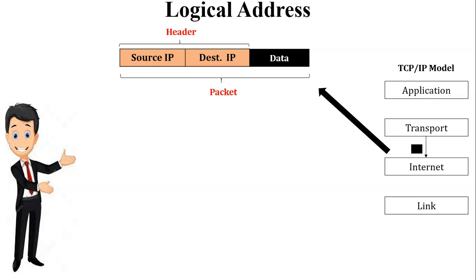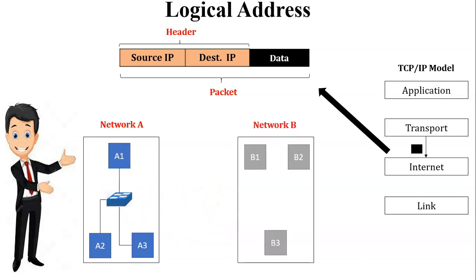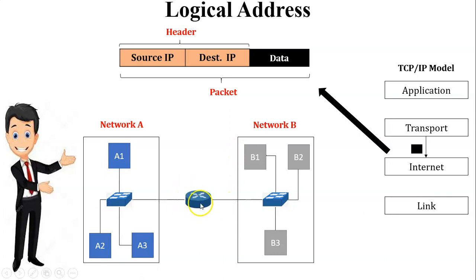Now let us see a scenario of data transfer through IP address in the same and different networks. Here is Network A with three PCs — A1, A2, and A3 — all connected through a switch. Network B also has three PCs — B1, B2, and B3 — connected through a switch. To connect these two different networks, a router is used. In this example, A1 is the sender, and A3 and B3 are both receivers. A3 is in the same network as the sender, while B3 is in a different network.